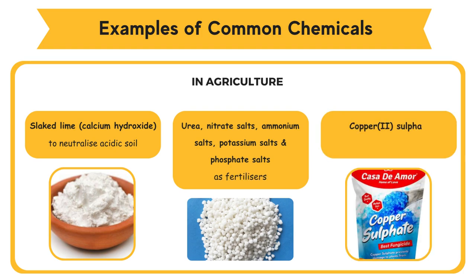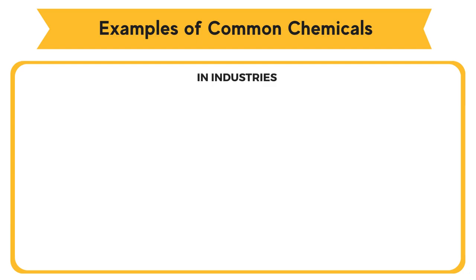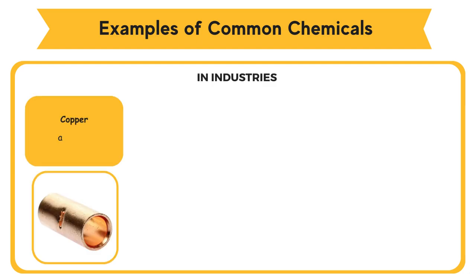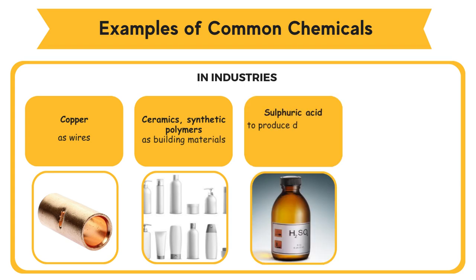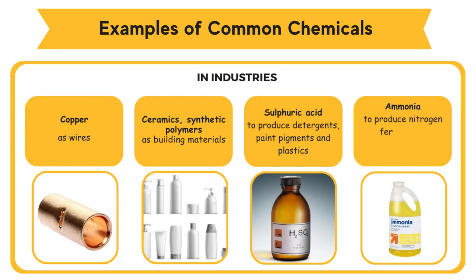Copper(II) sulfate, as fungicide. In industries: copper, as wires; ceramics and synthetic polymers, as building materials; sulfuric acid, to produce detergents, paint pigments, and plastics; ammonia, to produce nitrogen fertilizers and as cooling agents in air conditioners.